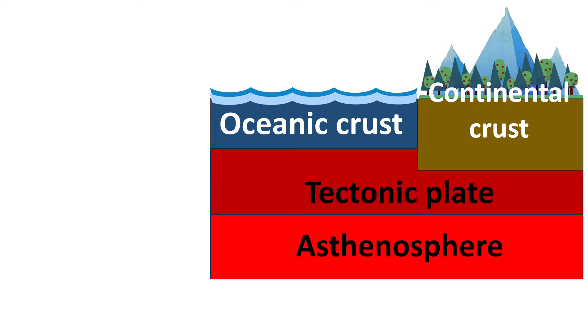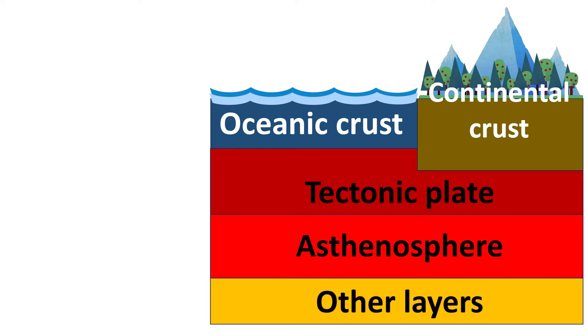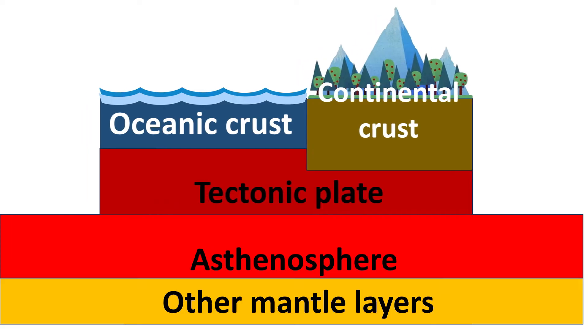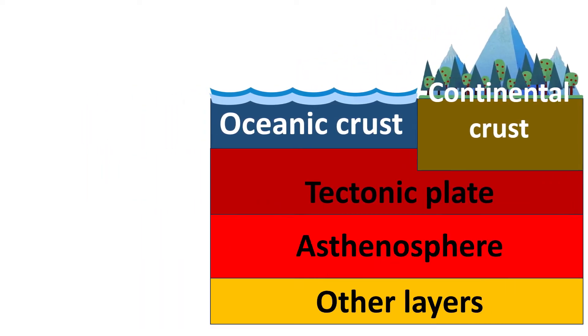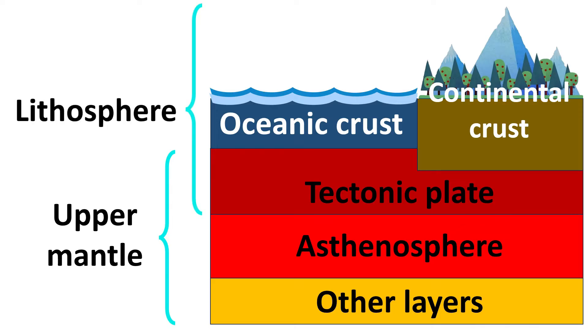Immediately below the tectonic plates is a layer called the asthenosphere. The tectonic plates slide over the asthenosphere. Although the crust and the tectonic plates are part of different layers, geologists often use the word lithosphere to refer to the tectonic plates and the crust.